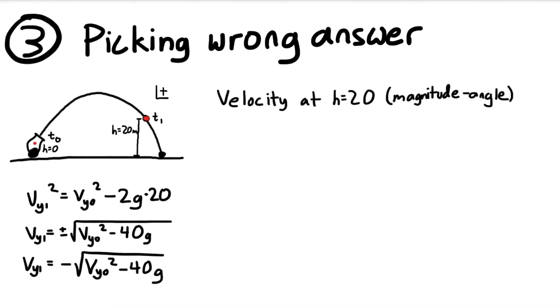So our third common error is picking the wrong answer. We're going to continue using the example from the previous problem, where we're solving for the velocity at height equals 20 after the peak, and we're solving in magnitude angle notation. So again, we can start with this v-y-1 squared equation.